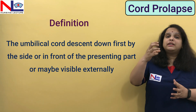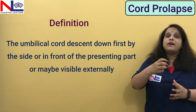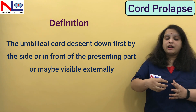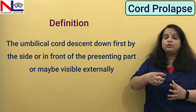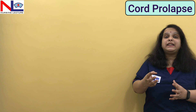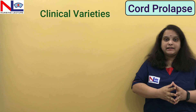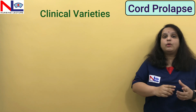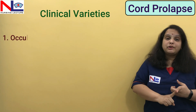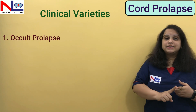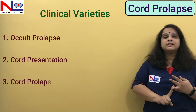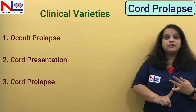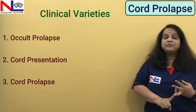Depending on the descent of the umbilical cord — how much the cord descends down — there are three clinical varieties: one is occult prolapse, second is cord presentation, and the third one is cord prolapse.